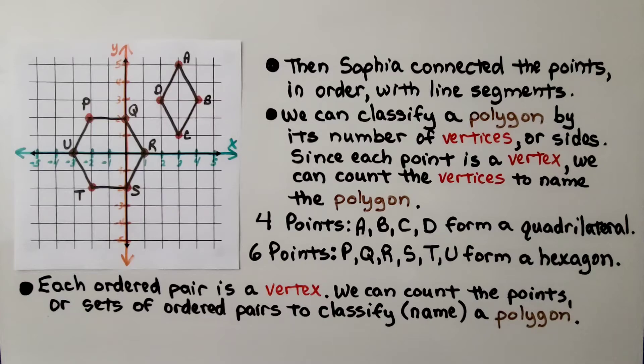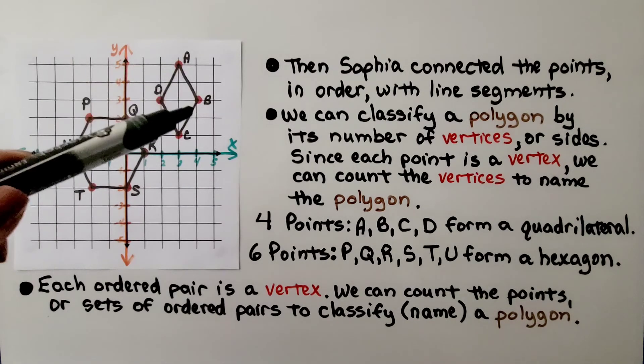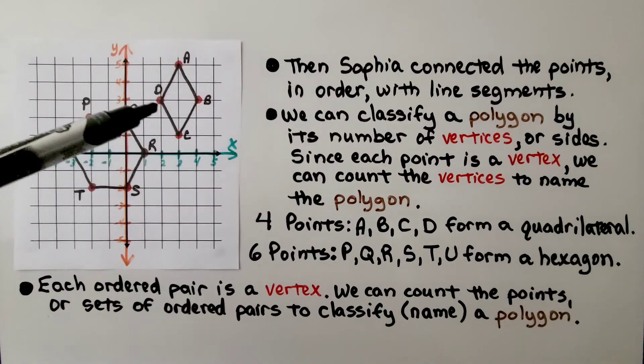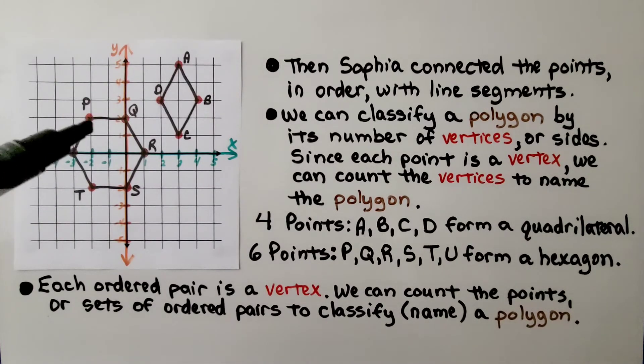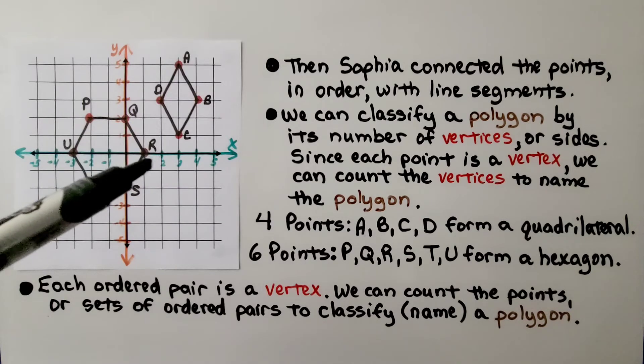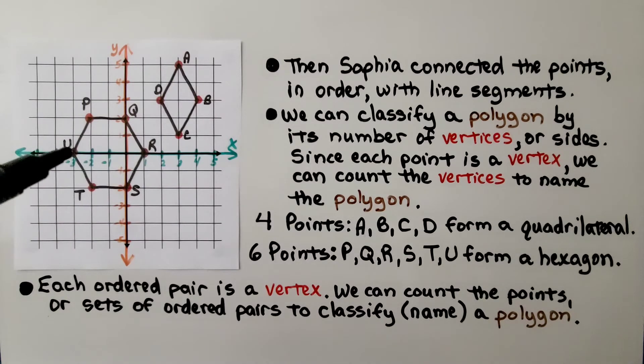Then, Sophia connected the points in order with line segments. She connected A to B, B to C, C to D, and D to A. She made the rhombus. And she connected P to Q to R to S to T to U back up to P.